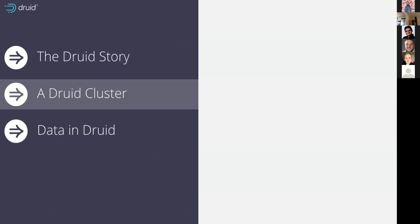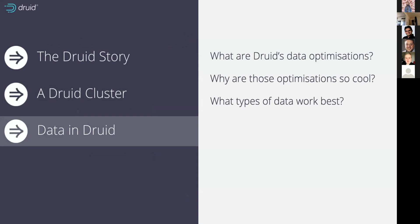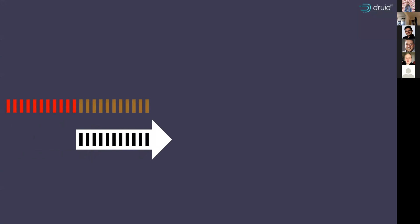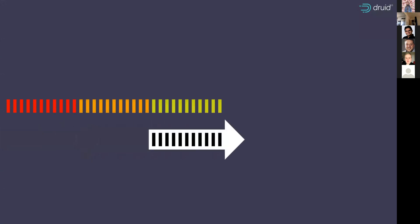What happens to the actual data that goes in? The data inside Druid is highly optimized for OLAP queries. It's a combination of time series, columnar, and search approaches to the data, to make sure that we optimize what is a very good format for writing data into one that's good for reading. Druid shards its data according to time first and creates a series of things called segments.